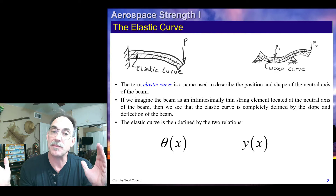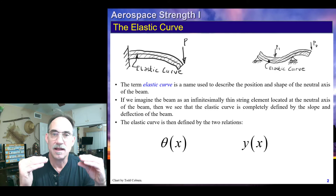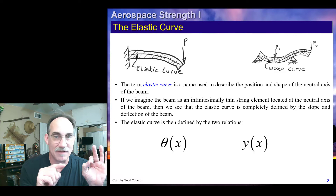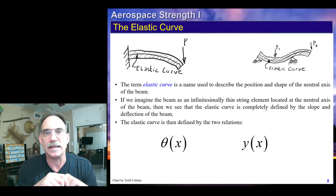The slope as a function of the x position of the beam moving from left to right — that's theta of x. And the deflection of the beam as a function of x as we move from left to right — that's going to be called y of x, and in some examples from Hibbler, we'll see it called v of x. No big deal.